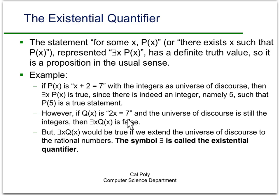However, if we look at the propositional function Q(x) where 2x equals 7, and the domain of discourse is still the integers, then 'there exists x such that Q(x) is true' is a false statement — because there is no integer x that makes 2x equal to 7.